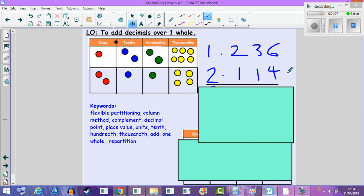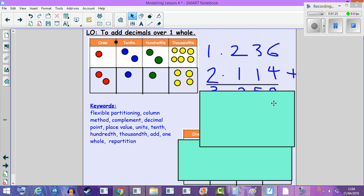We start from the right-hand side and we add each column one at a time. Six thousandths add four thousandths is ten thousandths, so we repartition into the next column.